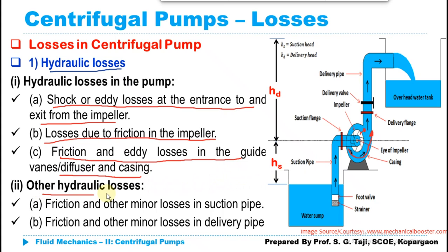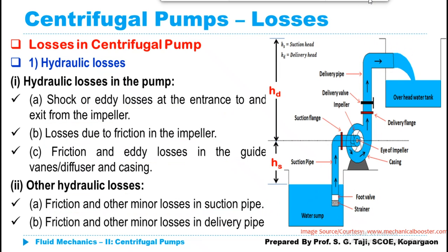Additionally, there are other hydraulic losses such as friction and minor losses taking place in the suction pipe, and similarly the same types of losses taking place in the delivery pipe. Those are the hydraulic losses we need to consider while discussing efficiencies.